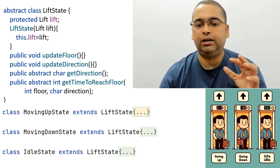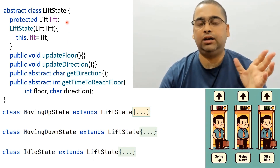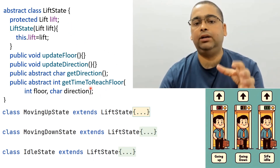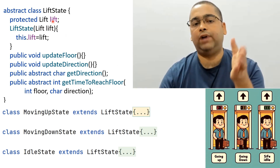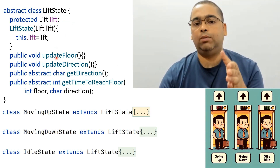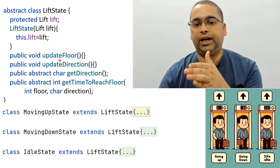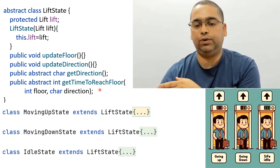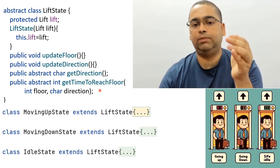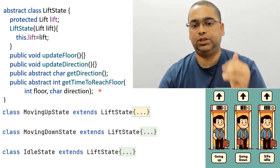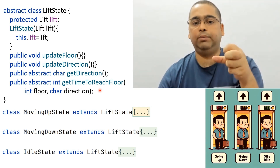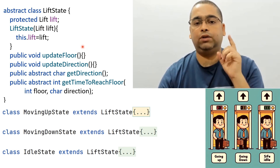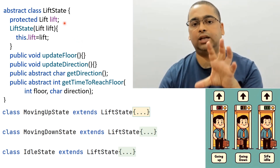For implementing the state design pattern, you need two things. The first is either an interface or an abstract class — basically a super class — which contains all the common behavior, that is the common methods. In this case, I have used the class LiftState. It contains common methods like update floor, which will be called every second, update direction, get direction, and the core method get time to reach floor, using which a lift tells the lift system how much time it will take to start processing a user's request. Using those timings, the optimal lift will be chosen for a given request.